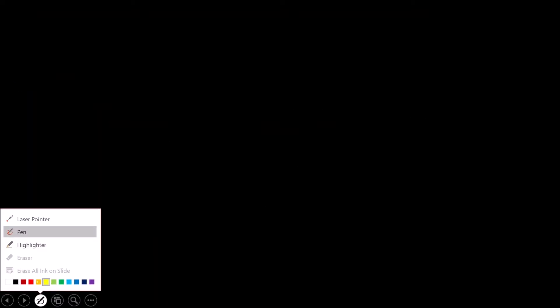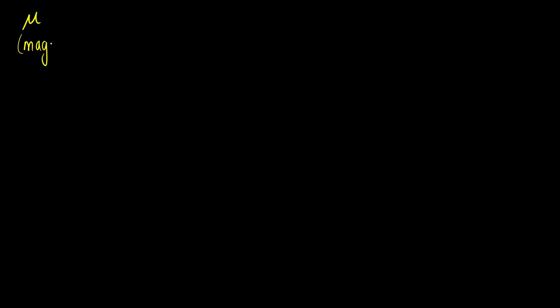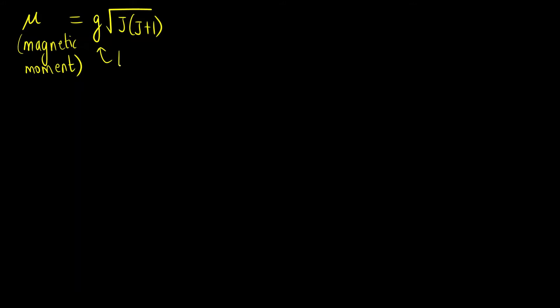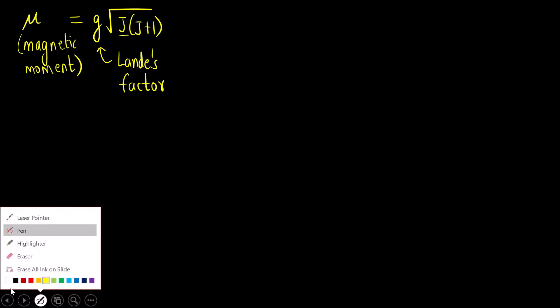The first thing we must know is the formula for the magnetic moment μ. The formula to calculate the magnetic moment is: μ = g × √(J(J+1)). Here g is called the Landé factor, and J is the total angular momentum quantum number, which we also have to calculate.